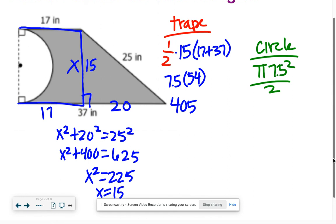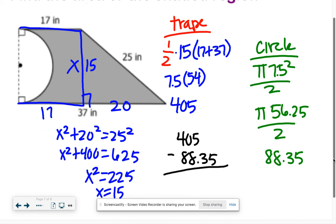Let's do this. Pi times 7.5 squared is about 56.25, all over 2. Type that into your calculator and you should get about 88.35.